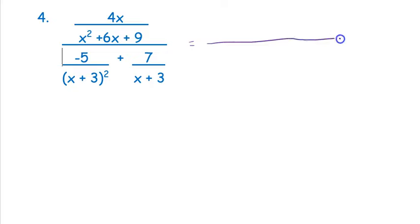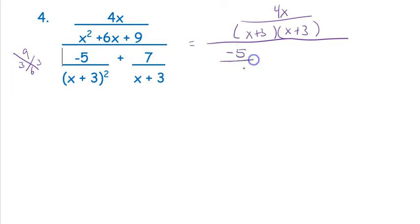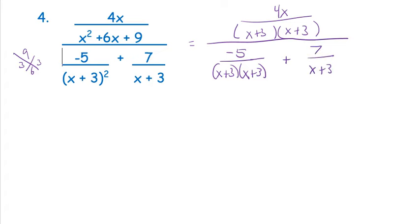Example four is another one where we need to factor first. I start with the denominator on top — this is trinomial factoring. I have 9 here and 6 here, so I ask: what multiplies to get 9 that I can add to get 6? That would be 3 and 3, so I have (x + 3)(x + 3). On the bottom I have −5 over (x + 3)², which I'll write out as two factors, and then 7 over just one (x + 3).